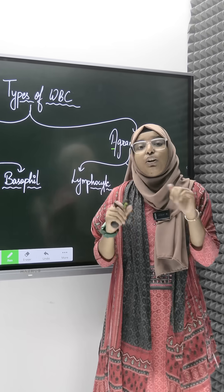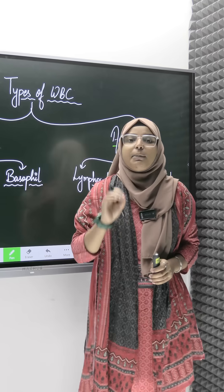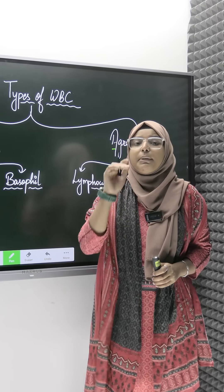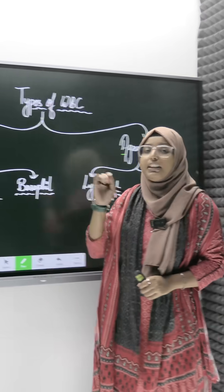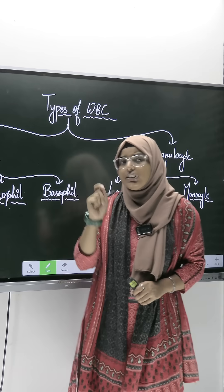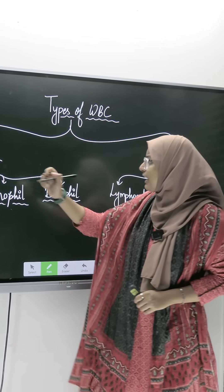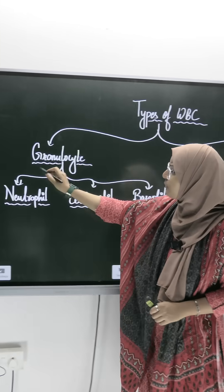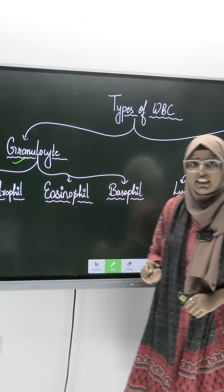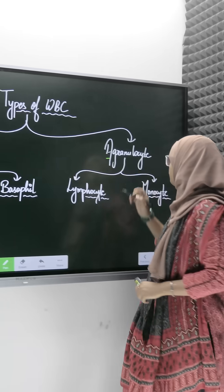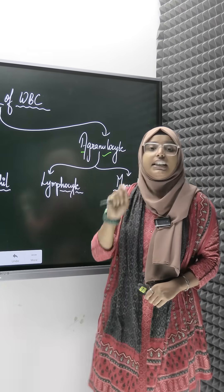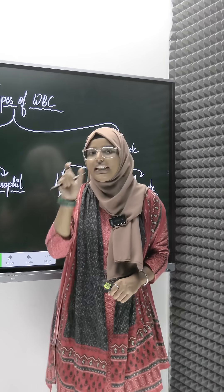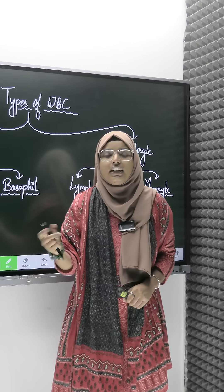Hello guys. This is Part 2 of WBC, where we talk about types of WBC. We have two types of WBC depending on granules: we call them granulocytes, and we call them agranulocytes — 'A' for absent, meaning they have no granules.